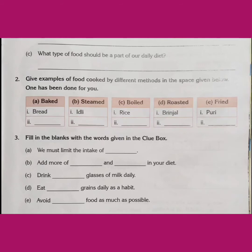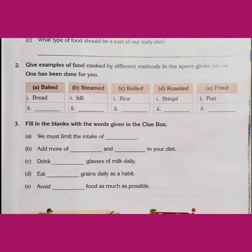Question number 2: Give examples of food cooked by different methods in the space given below — one has been done for you. कुछ food baked होते हैं, कुछ steamed होते हैं, कुछ boiled होते हैं, कुछ roasted और कुछ fried होते हैं। आपको सबके second example लिखने हैं। Baked: bread के अलावा — cake। Steamed: इडली के अलावा — ढोकला। Boiled: rice के अलावा — potato। Roasted: brinjal के अलावा — chicken। Fried: पूरी के अलावा — पकोड़े। इनकी spellings बहुत carefully लिखेंगे।